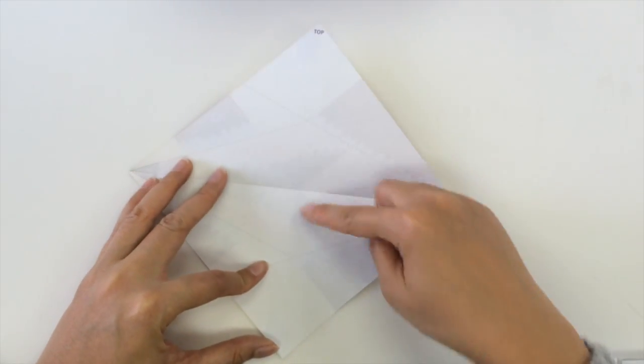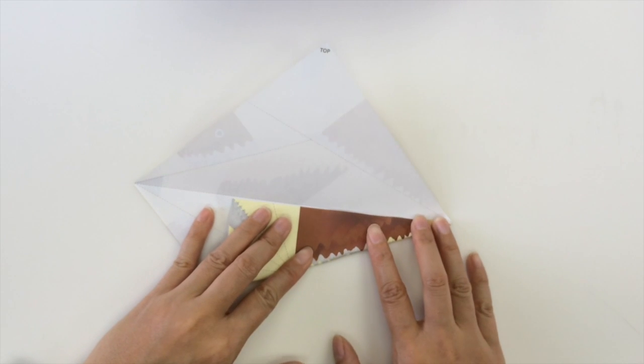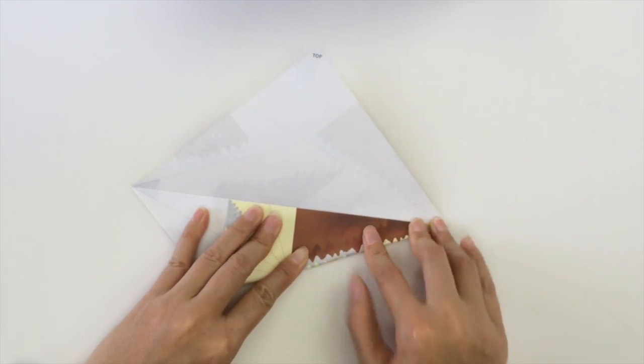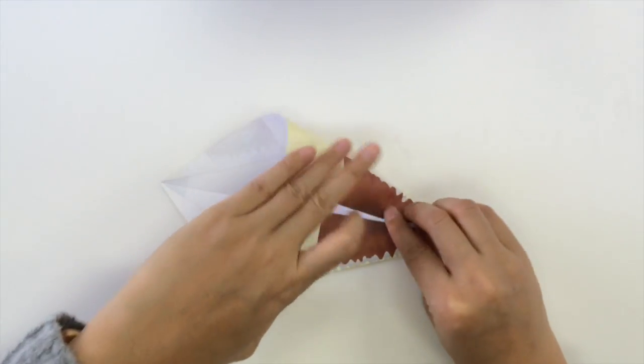Next, we're going to fold the outer edges towards the middle line we just creased, like this. One and the top.